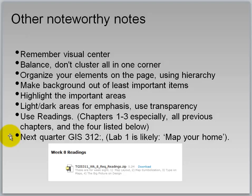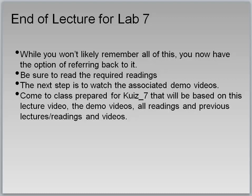Use your readings: chapters 1 through 3, all previous chapters, and the four supplemental readings — one on map layout, one on map symbolization, one on type on maps, and one on the big picture of design. Use those as references. You won't have time to read them cover to cover but keep them as a very good reference for creating good maps. Remember that next quarter in GIS 312, lab 1 is likely as simple as 'map your home.'